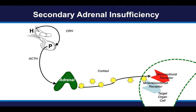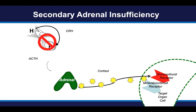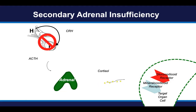Secondary adrenal insufficiency is a different form of adrenal insufficiency. In secondary adrenal insufficiency, there is a problem with the hypothalamus and/or the pituitary, such that there is an insufficient or deficient production of ACTH. Since you need ACTH to make cortisol, there is a resultant deficiency of cortisol, but not necessarily aldosterone. In secondary adrenal insufficiency, the adrenal cortices — the adrenal glands — are fine; nothing happened to them, but they're not being stimulated by ACTH and therefore not producing cortisol.